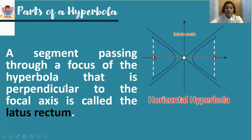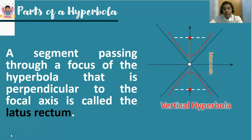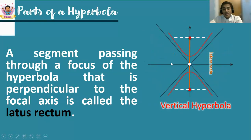A segment passing through a focus of the hyperbola that is perpendicular to the focal axis is called the latus rectum. There are two latera recta on the figure, both passing through f-sub-1 and f-sub-2 respectively. In a vertical hyperbola, they are parallel along the focal axis.